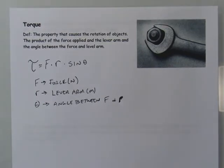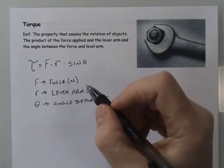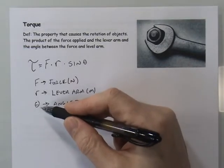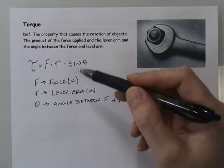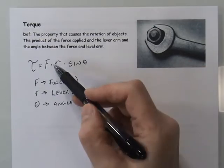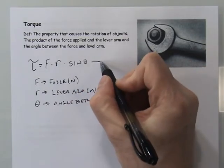The units for torque are important. The sine of an angle has no units because it is a ratio of two sides. So the units come only from F and r.